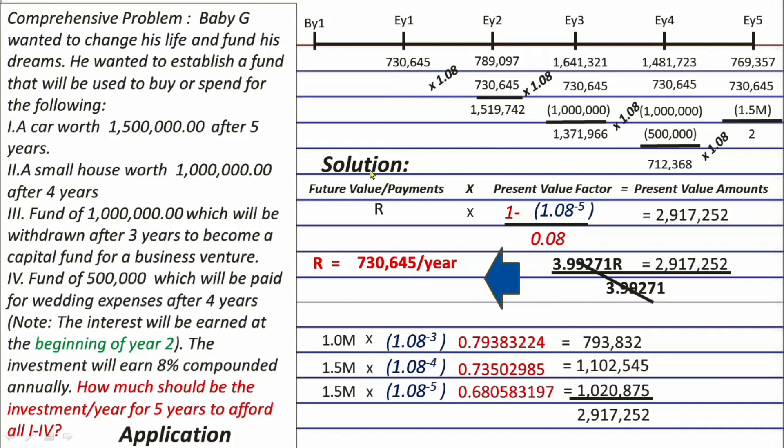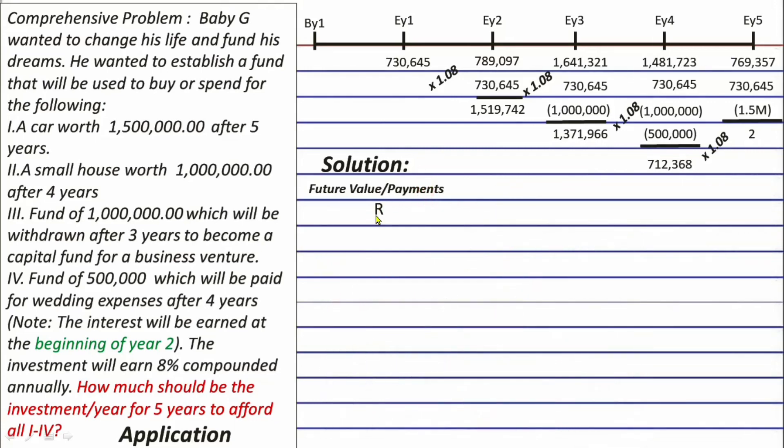As I have told you, this is only one of the solutions to this comprehensive problem and in here, we use the present value ordinary annuity in computing for the investment per year. Well, solution number 2 is actually using the future value. Instead of present value factor here and the present value here, we are going to change them to future value factor and in here, we have the future value amounts. The R will remain the same. In here, instead of 1 minus 1.08 raised to the power of negative 5, it will become 1.08 raised to the power of positive 5.